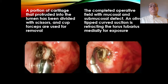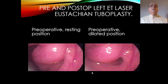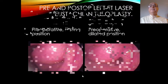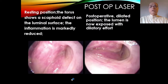Avoid injury to the anterolateral wall where tensor veli palatinae is present, and avoid contact with the internal carotid artery. In the images, you can see the edematous torus tubarius; with laser, fibrous mucosa and soft tissue are removed, and a protruding cartilage piece is excised. The completed operative field shows the mucosal and submucosal defect. Pre-operative and post-operative images demonstrate that the Eustachian tube opening is now well visible, and dilatory function is restored after laser surgery.